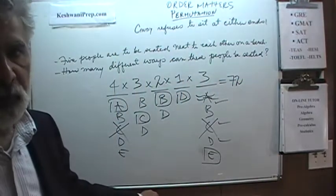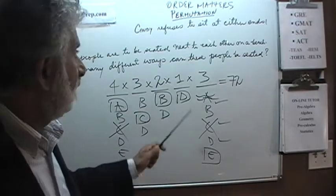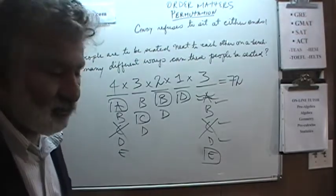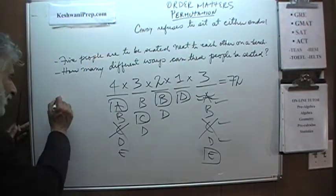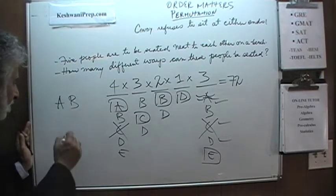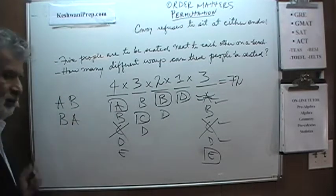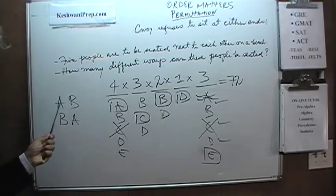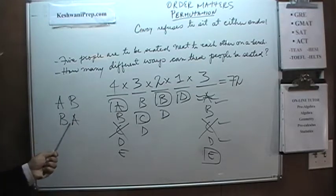This is what is known as a permutation problem. In permutation, order matters. It matters how they sit. A and B is a very different arrangement than B and A. In this case A is sitting on the left hand side and B is sitting on the right hand side. Here is the other way around. These are not the same.